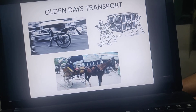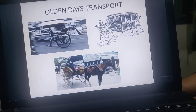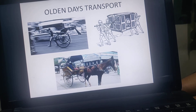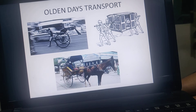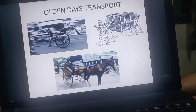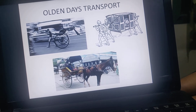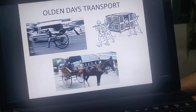Even before those carts, when there were no vehicles at all, kings and queens used animals for travelling. Animals like horses, camels, elephants, and donkeys were used as means of transport.